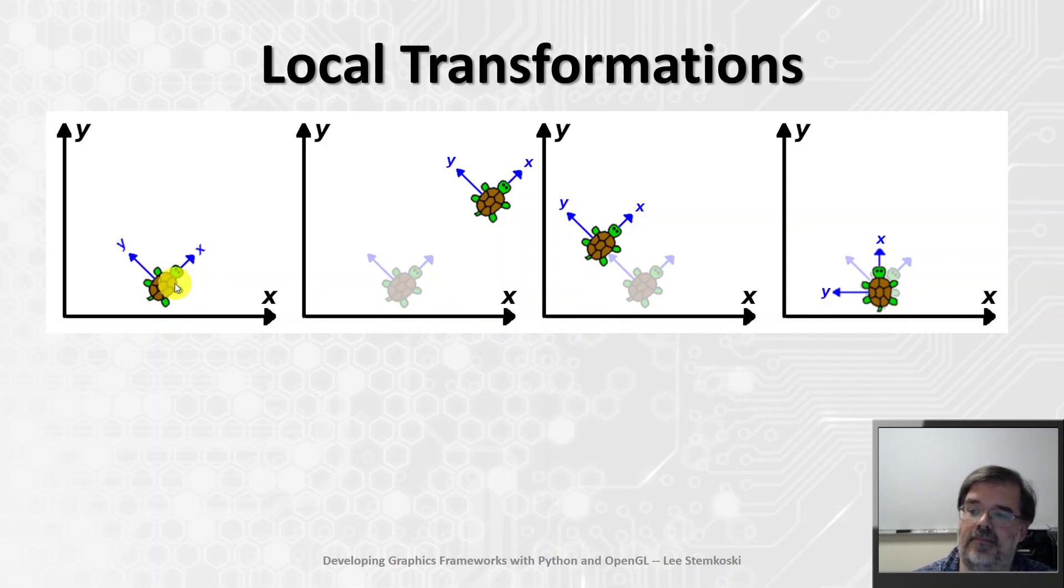So here in this diagram, let's start off with this turtle on the left part of this image. It has its own local x and y-axis. So I might want to, say, perform a translation or rotation of this turtle with respect to these local blue axes. For example, maybe I want to do a local translation in the x-direction by two units. So I want to start in this position and move it two units up.